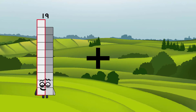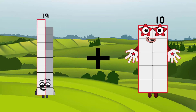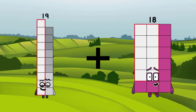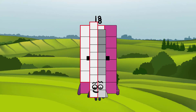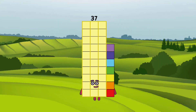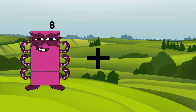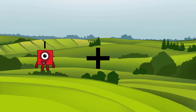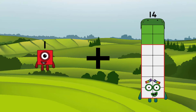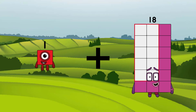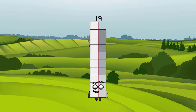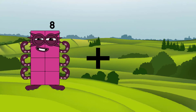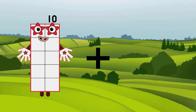19 plus 18 equals 37. 1 plus 18 equals 19. 10 plus 17 equals 27.